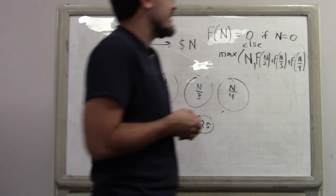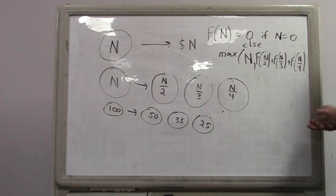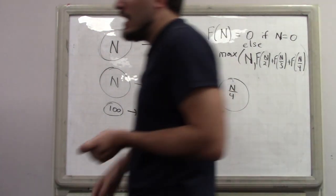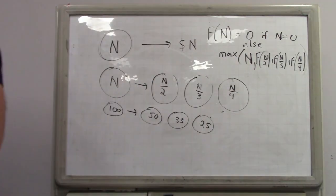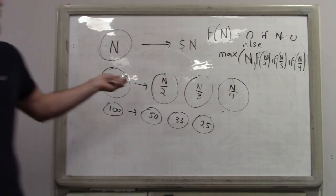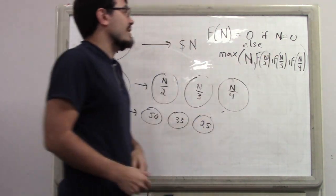Everybody clear on the solution? It seems really straightforward to solve it this way — it's an intro problem on Sphere Online Judge. All divisions are truncating, you just use an integer map, it works out.